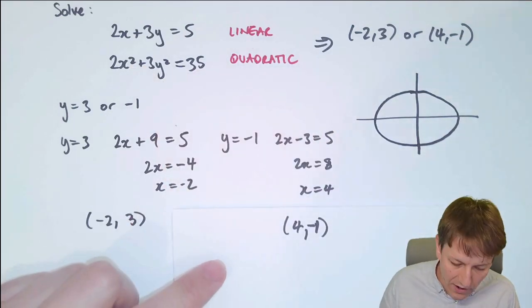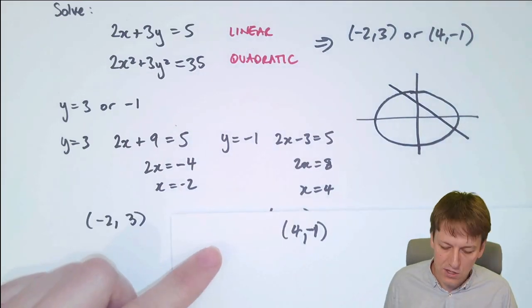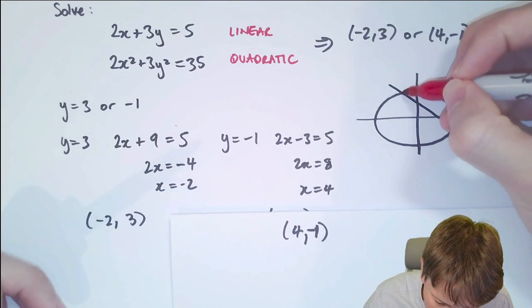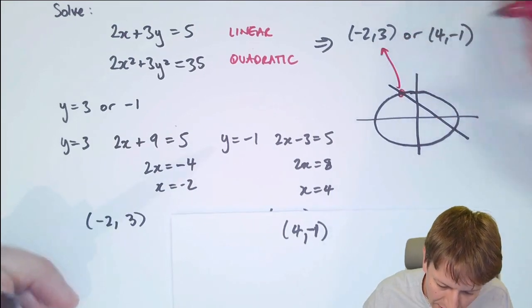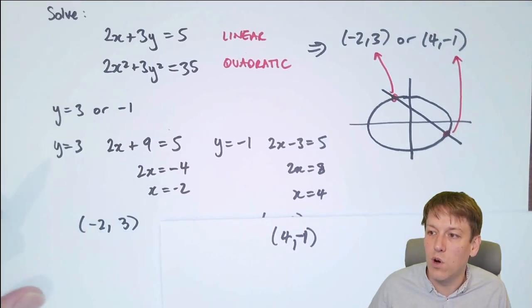They would look something like these two equations. You can see that the points we've found here, we've got this one which is minus 2, 3, and this one which is 4 minus 1.